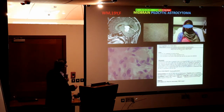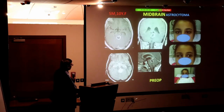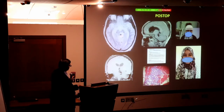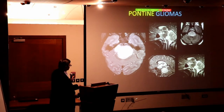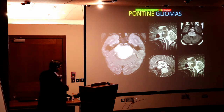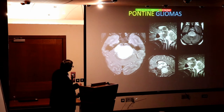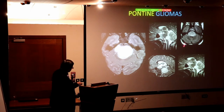This is a glioma in the upper part of the midbrain in a girl we operated upon — histology showed pilocytic astrocytoma, a very benign lesion. Another lesion in the back of the midbrain was also an astrocytoma — we operated, here is the post-op, histology, and follow-up. This collection shows pontine gliomas of various types: diffuse, localized, and so on.